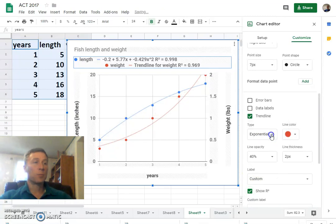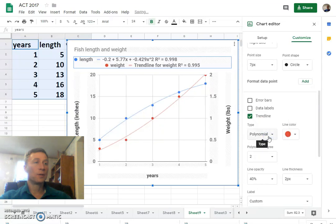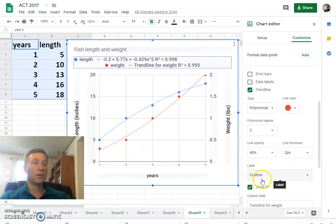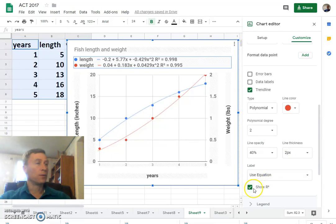But I think we can do better. Let's see what exponential does. No, it's a bit decent. But let's go polynomial. 0.99, wow, that's really good. Let's try that. So we're using the equation, I'm showing R squared.